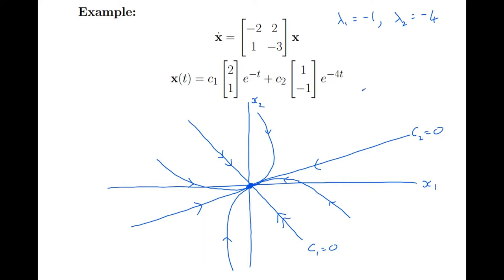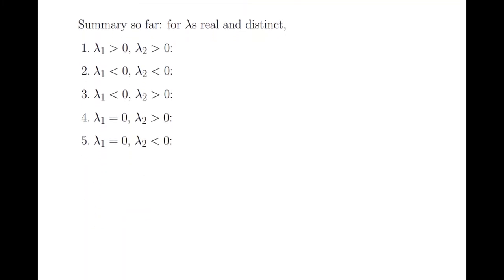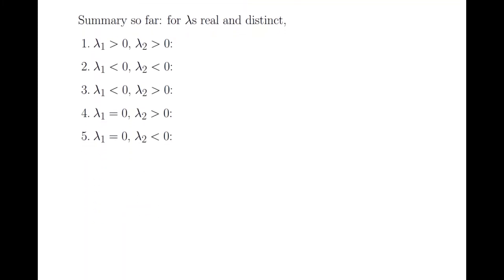This is a sink. All orbits tend to 0 as t tends to infinity. The fixed point at the origin is stable. So, to sum up we haven't done every possible case of a 2x2 linear system but we've done a lot of them. We've done the cases when the eigenvalues are real and distinct.